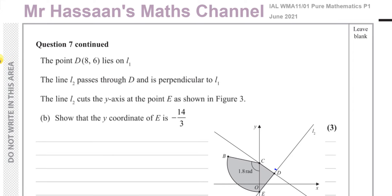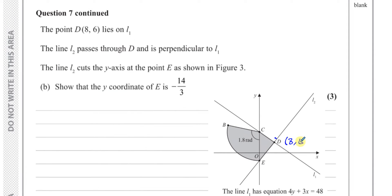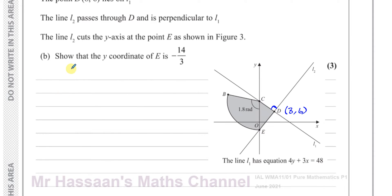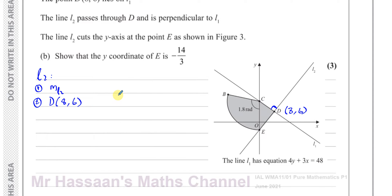Part B says the point D (8, 6) lies on line 1, as you can see. The line L2 passes through D and is perpendicular to line 1, so L1 and L2 are perpendicular lines. L2 cuts the y-axis at the point E, as shown in figure 3. We need to show that the y-coordinate of E is negative 14 over 3. To find the y-coordinate of E, I need the equation of line 2. To find the equation of a straight line, I need the gradient and any point on the line — we know D is on line 2.